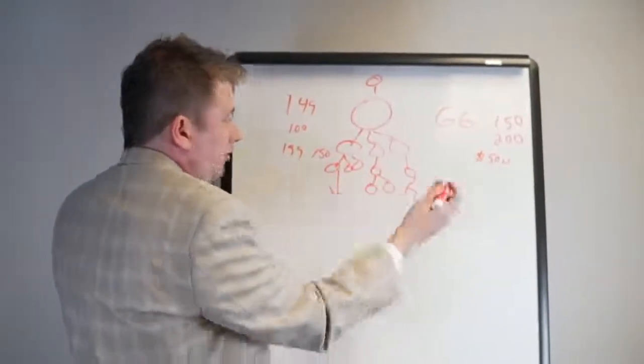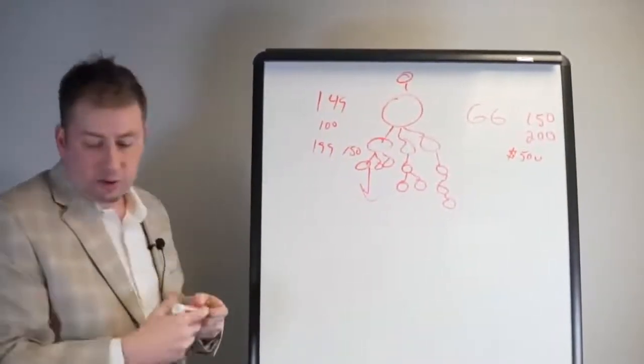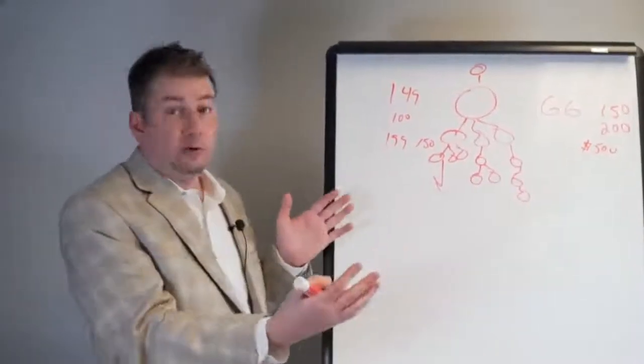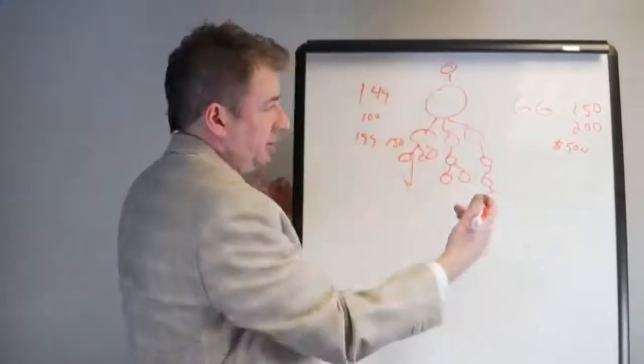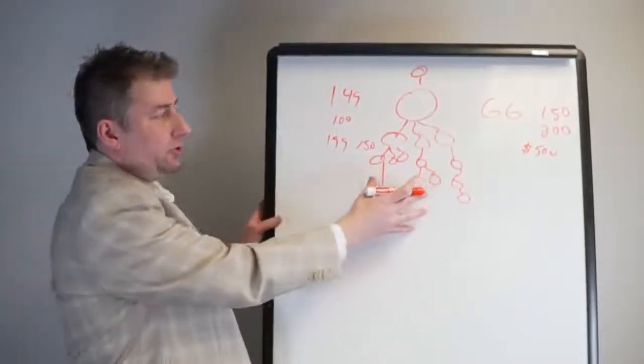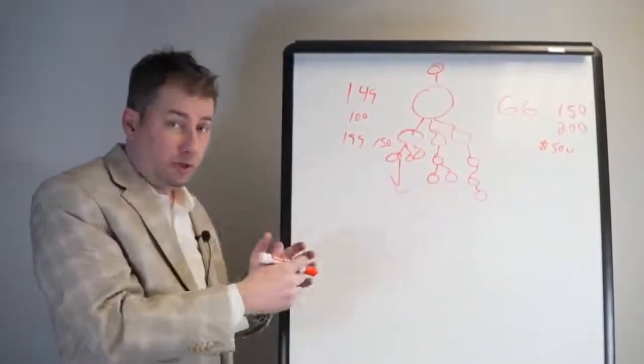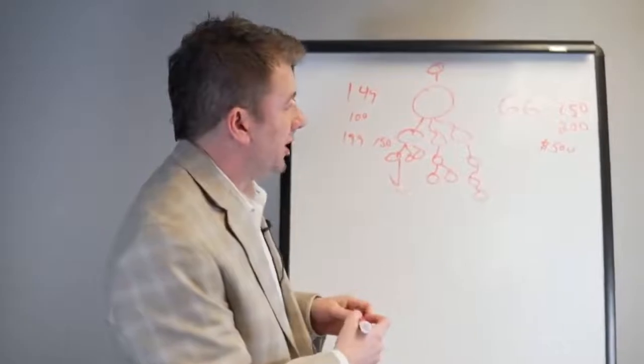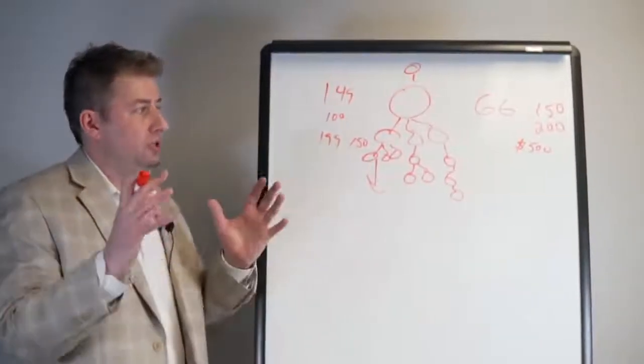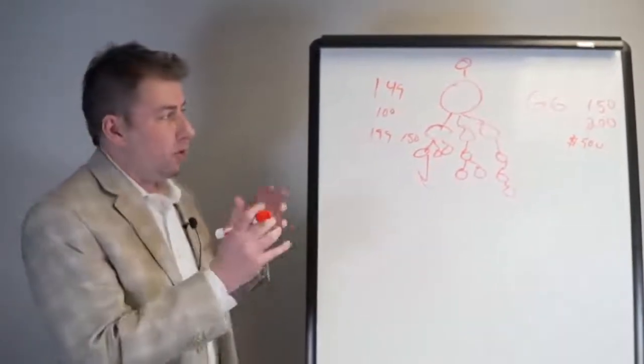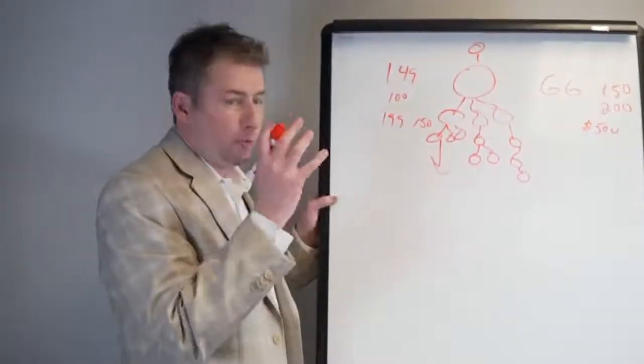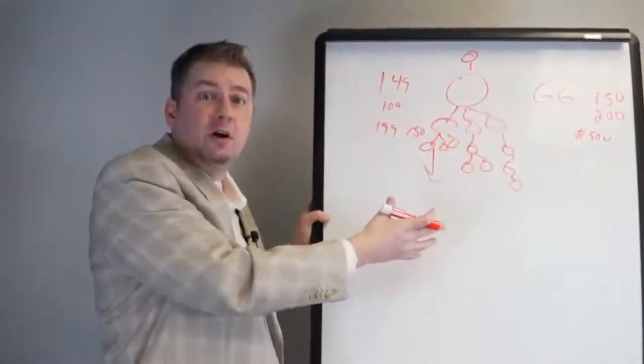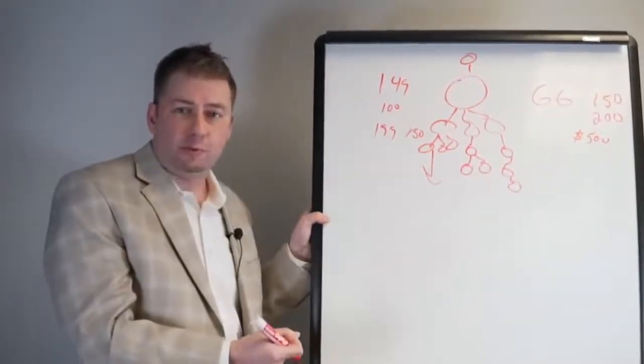To make $500 in a normal compensation plan is usually about 10,000 in volume. In a binary 5,000 volume on each side, but in any plan it's about 10,000 volume to make 500. You're doing it with 1300 volume over here. So literally we're paying about almost 900 or 1,000% more than what most companies are doing. And that's one of the secrets of this plan. Instead of putting the huge percentage of what's paid out on the top ranks, we're paying the highest percentages.